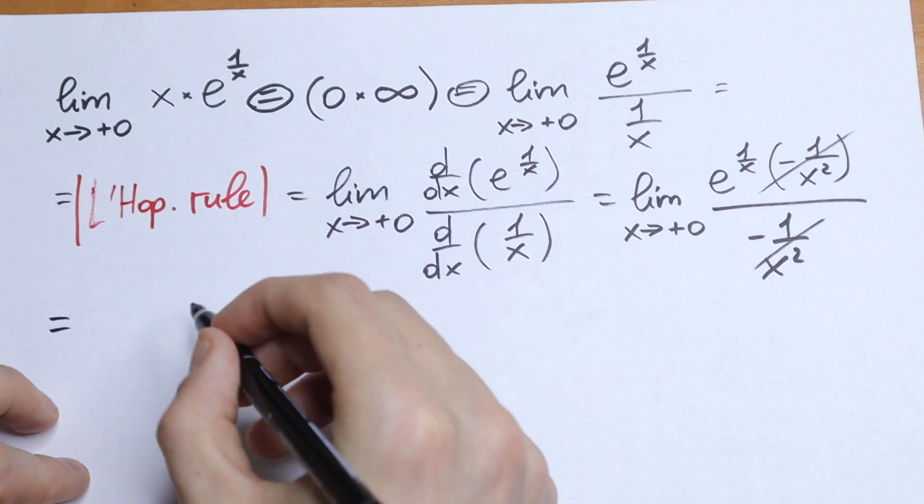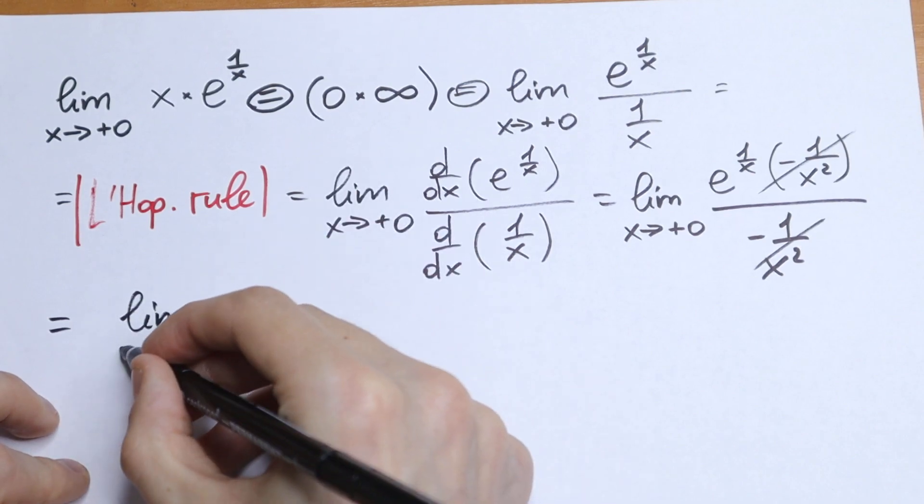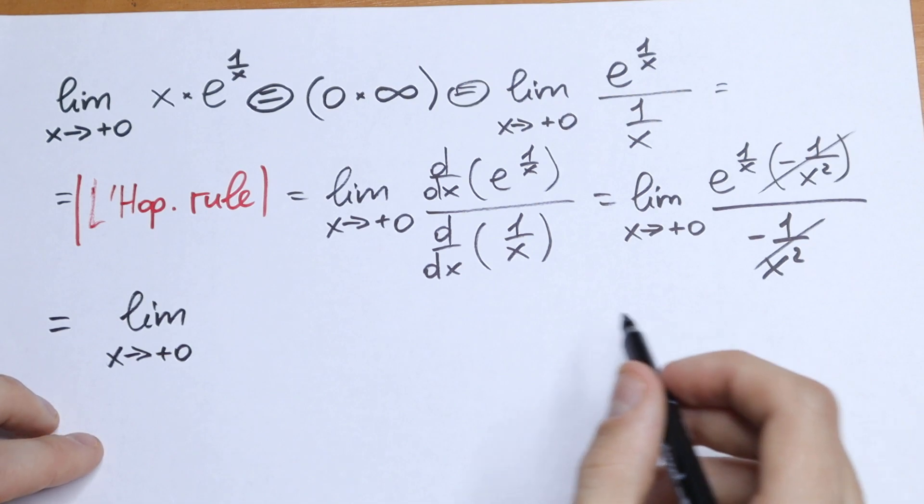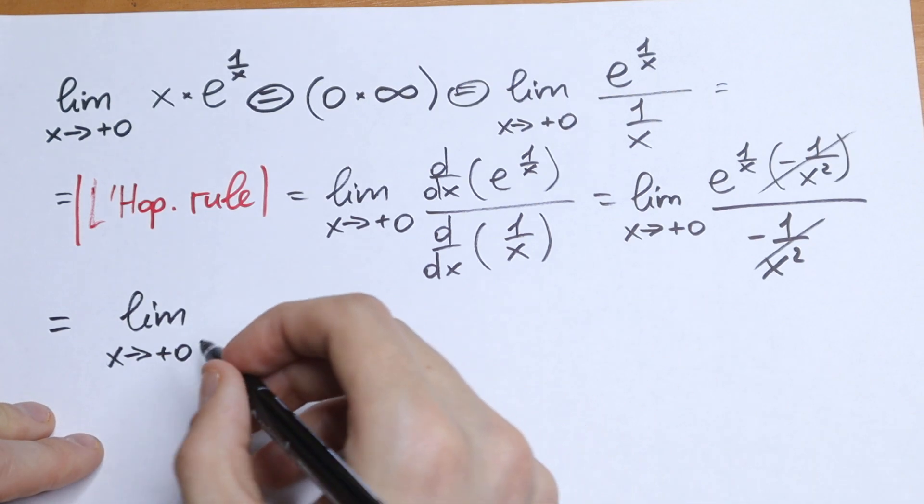So as a result we will have that this limit will be equal to limit as x approaches 2 plus 0 of the function e to the power 1 over x.